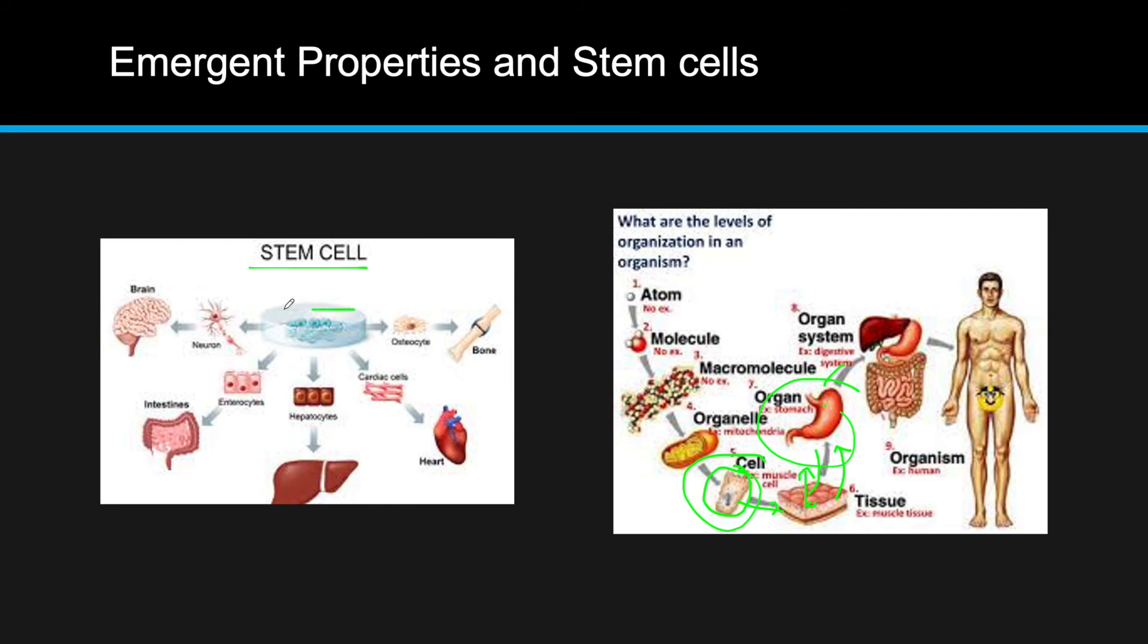A single embryo does not have all the cells that it needs pre-existing. It has one type of cell called totipotent stem cells. Toti means all, which can differentiate into any different type of cell it needs. It's also worth noting that totipotent stem cells can also differentiate into the placenta.